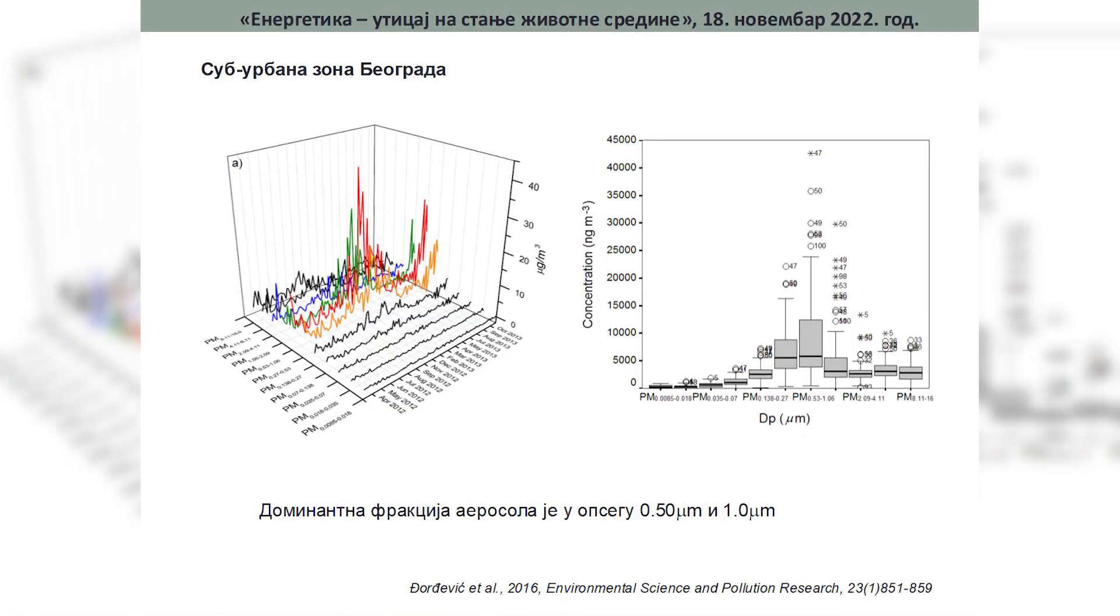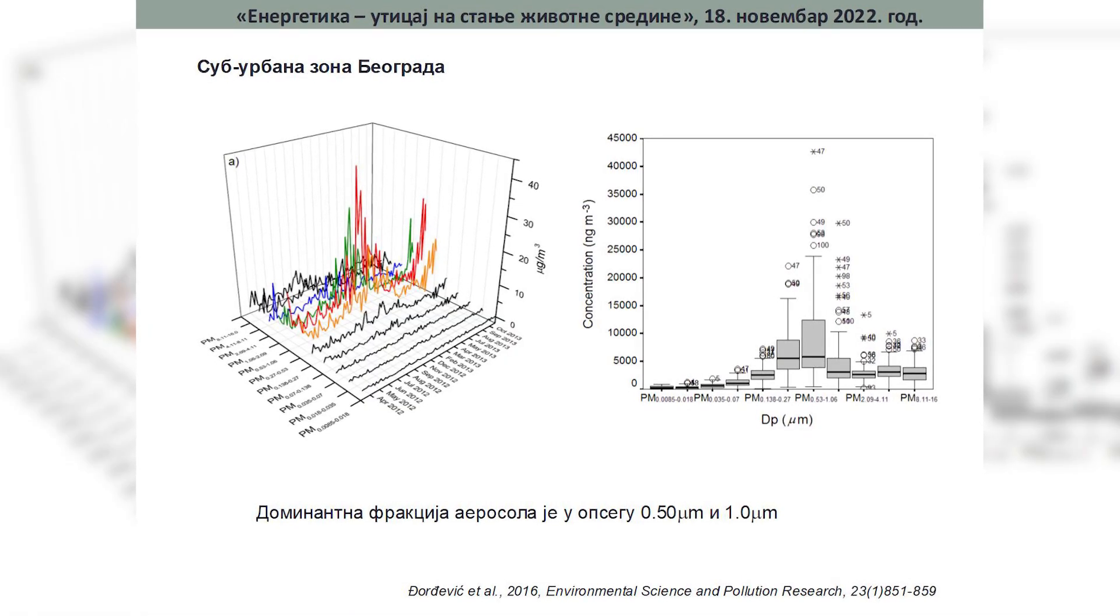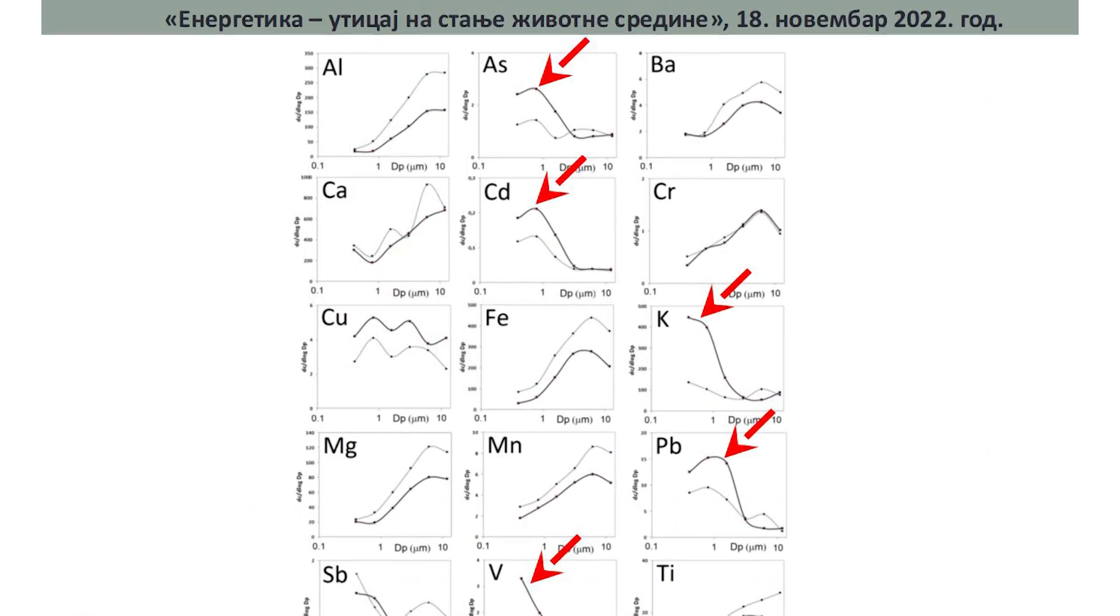U okviru toga, u našoj laboratoriji prvo radimo hemijsku pripremu uzoraka, radimo razaranje sedimenta i zemljišta, zatim se u tim ekstraktima određuje sadržaj toksičnih elemenata. A nakon toga, kada dobijemo bazu podataka na osnovu sadržaja elemenata, procenjujemo biodostupnost, zatim rizik po životnu sredinu. Znači radimo analizu dobijenih podataka.